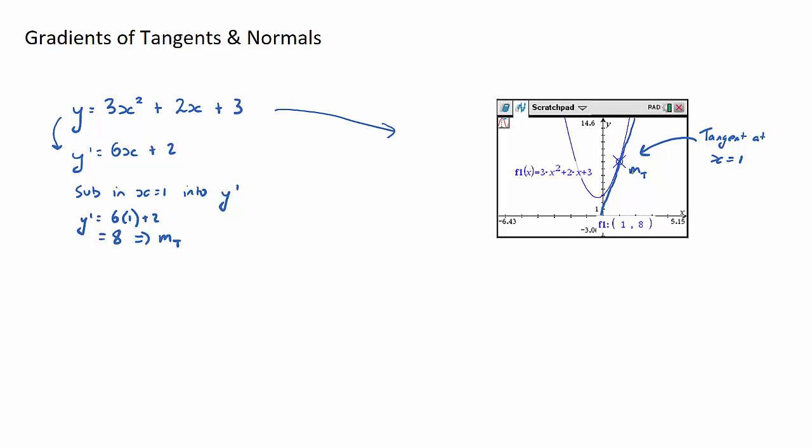The only other thing I do want to talk about is what about a normal at the point x equals 1. As we talked about in coordinate geometry, normals are perpendicular lines to tangents like this, and the relationship is that the gradient of the normal is equal to minus 1 on the gradient of the tangent. We found the gradient of the tangent here to be 8, so the gradient of the normal here would be minus 1 on 8.